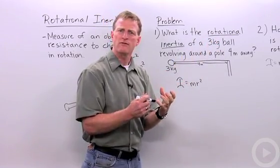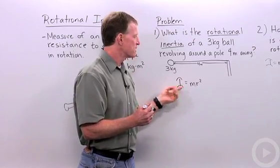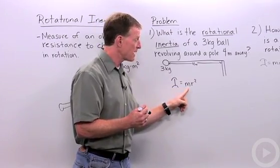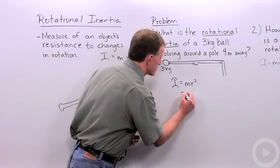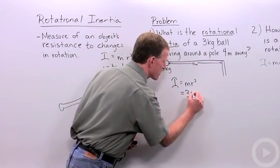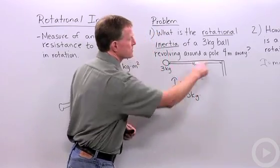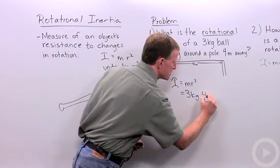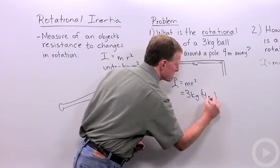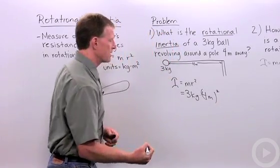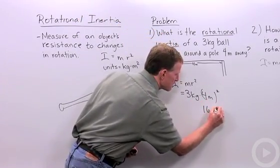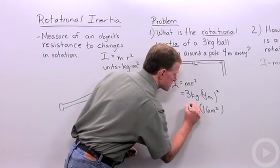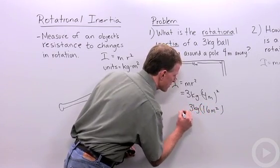This is pretty straightforward if you can remember this formula. Rotational inertia is the mass times the radius squared. Let's go ahead and plug those numbers in. I have 3 kilograms times the radius squared, which is 4 meters squared. 4 meters squared is 16 meters squared times 3 kilograms.